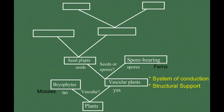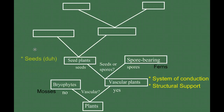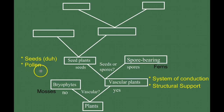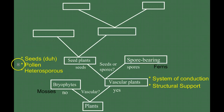So what evolutionary adaptation do seed plants have that we haven't seen up to now? The obvious one is that we have seeds. But maybe less obvious is that all seed plants have pollen, and seed plants are heterosporous. We're going to discuss what each of these things means and the evolutionary significance of them.